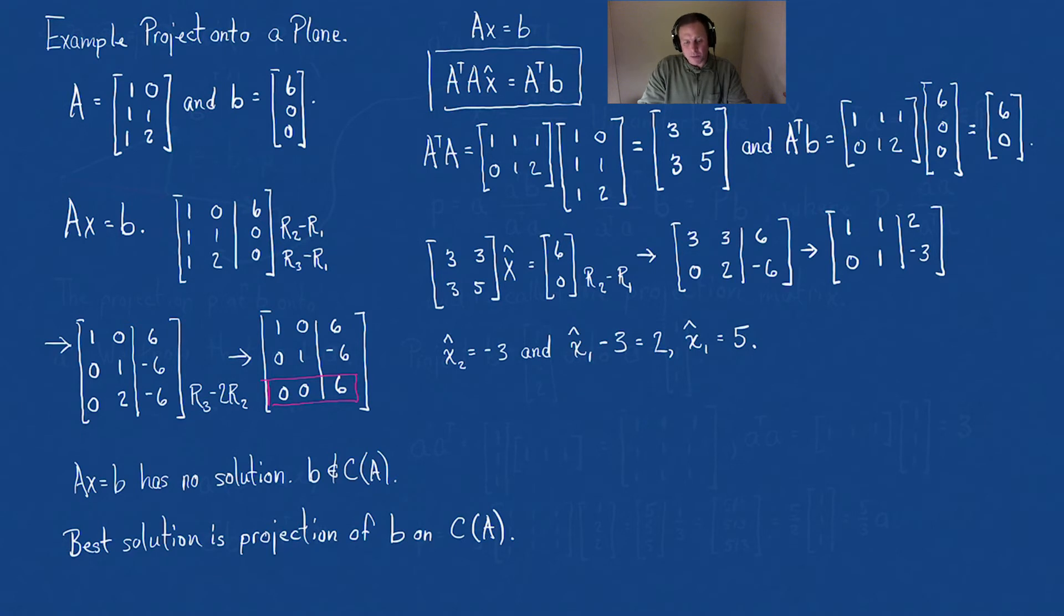But what were we after? We were after p. Well, p is A x hat. A is [1,1,1; 0,1,2] times our x hat [5; -3]. This becomes one column with three components: we're going to have 5, then 5 minus 3 which is 2, and then 5 minus 6 which is minus 1. So the projection into the plane is [5, 2, -1], and this is in the column space of A.